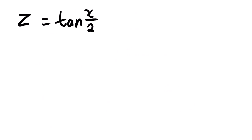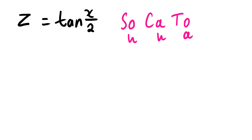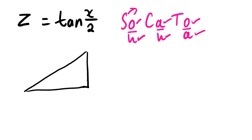The first thing that you need to know is simply: Z is equals to tan(X/2). Now we also need to know SOHCAHTOA. Sine is opposite over hypotenuse, cos is adjacent over hypotenuse, and tan is opposite over adjacent. With this we simply construct a right angle triangle. We let this to be our 90 degrees and then we focus on this angle — we let this angle to be X/2.